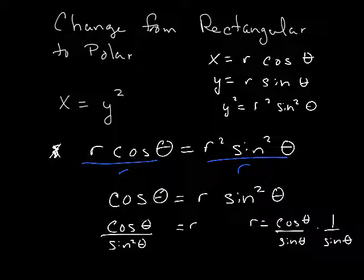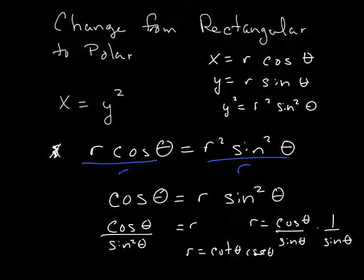It's usually how they want it. So really, R is equal to cotangent of theta and the cosecant of theta.